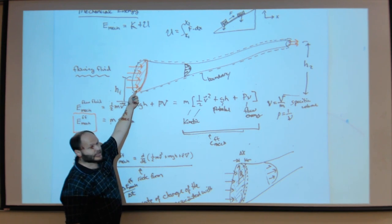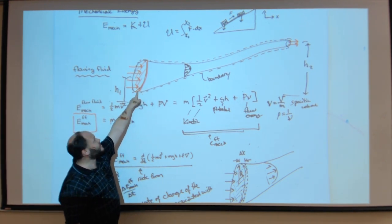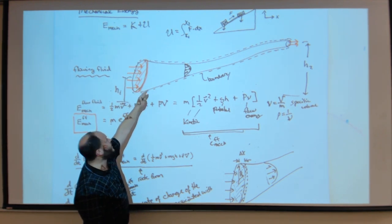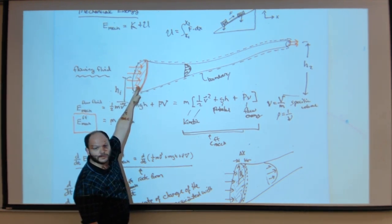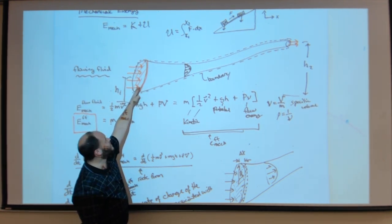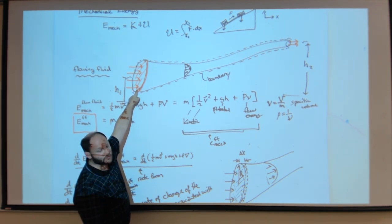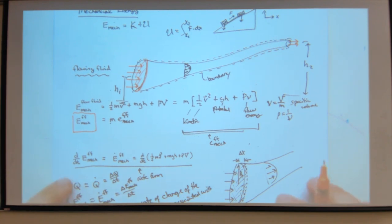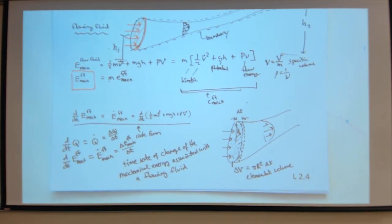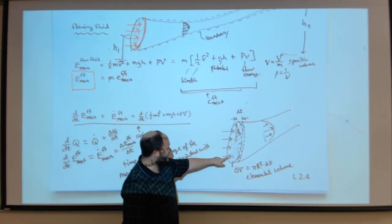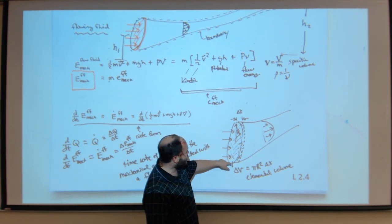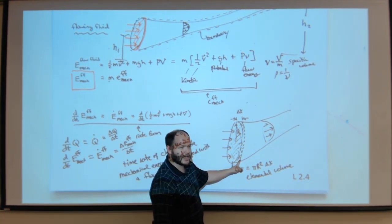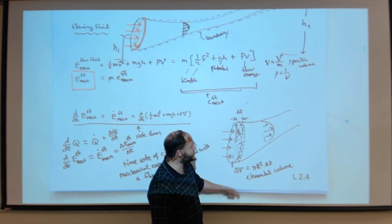When we do this formalism, we have to consider the inlet and outlet to our system. So now we have flowing fluid coming in. We define an elemental volume — cross-sectional area times some delta x gives me an elemental volume.